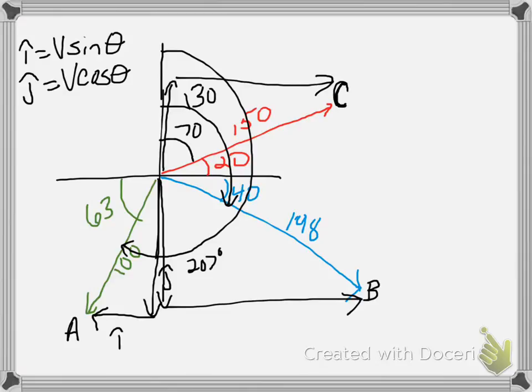So if we start with vector C right here, and we wanted to figure out the i-hat and j-hats, 70 degrees is our angle from north right there. Our vector is 150. So for the i-hat right here, we're going to take 150 times the sine of 70. And then for the j-hat, we'll take 150 times the cosine of 70. If you plug that in, 150 times the sine of 70 for your i-hat, that's going to be 141 i-hat. And then if you take 150 times the cosine of 70, you're going to get a plus 51.3 j-hat. That's your vector C.